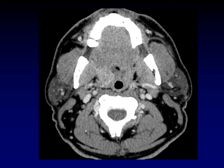Here's another example of squamous cell carcinoma arising within the tonsillar pillar. Note the relationship to the parapharyngeal fat — we're pushing it out laterally. This is another heterogeneously enhancing mass within the palatine tonsil itself, not deep to the palatine tonsil but within it. This is another squamous cell carcinoma.